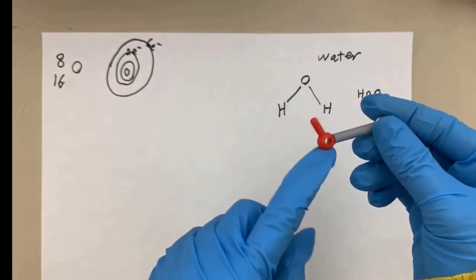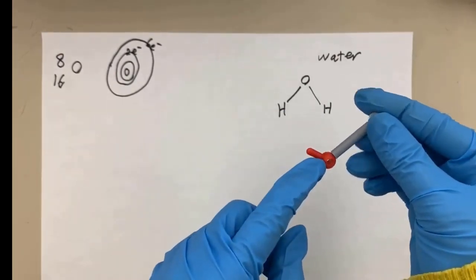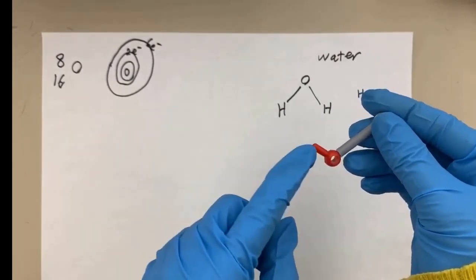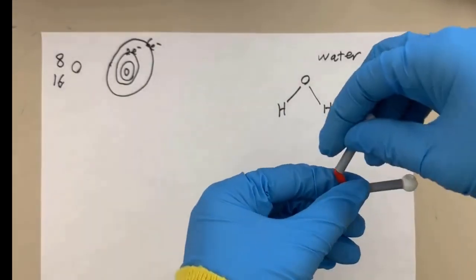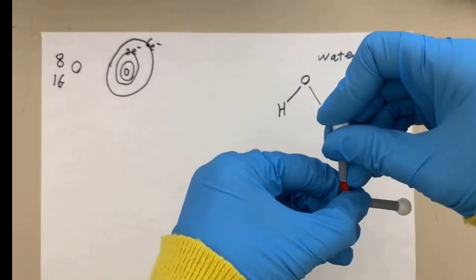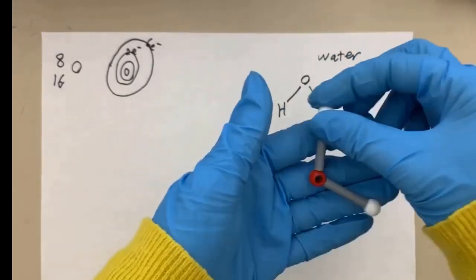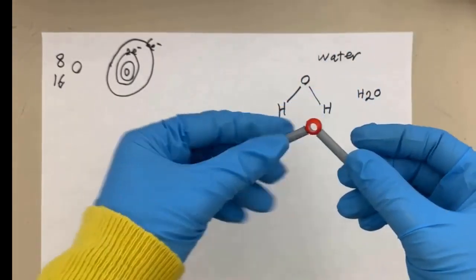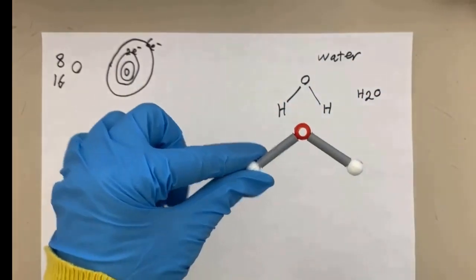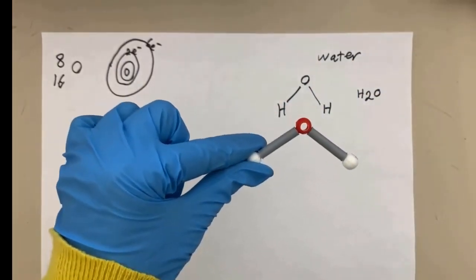Now I need to make the second bond between oxygen and another hydrogen. This is the completed water molecule.